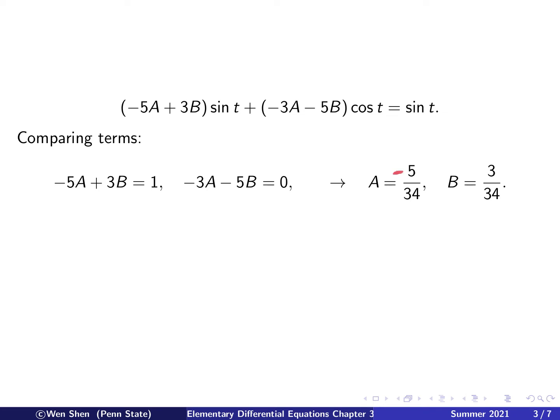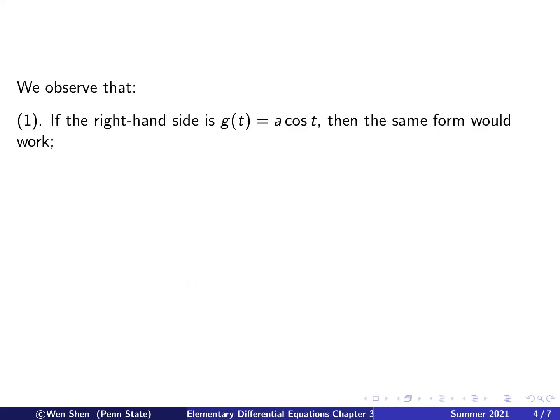A actually has to be negative — sorry for that typo. We have now found a particular solution by plugging back the values of A and B into the form A sine t plus B cosine t.